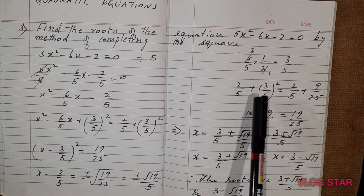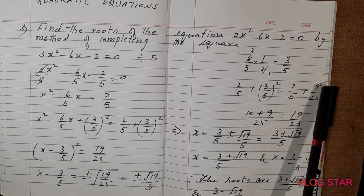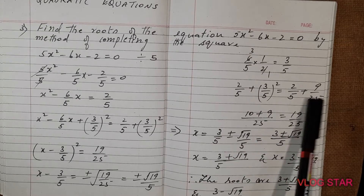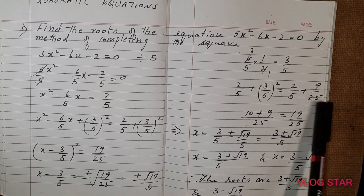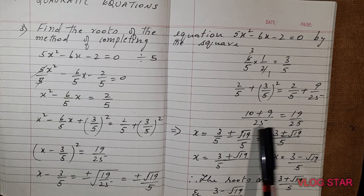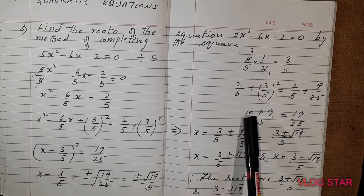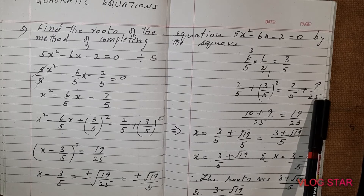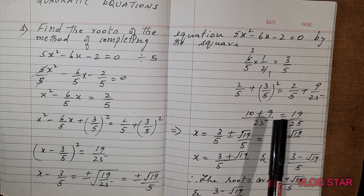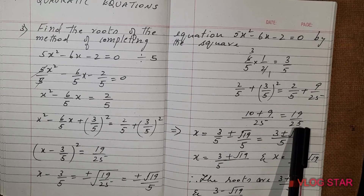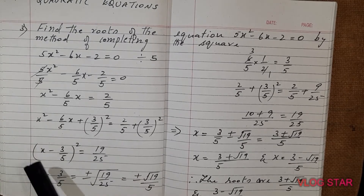Now solve the right side: 2/5 + (3/5)². That is 2/5 + 9/25. Take the LCM of 25 and 5, which is 25. Divide 25 by 5 — it goes 5 times, so 5 × 2 = 10. The other term stays as 9. So 10 + 9 = 19 divided by 25. So you get 19/25.